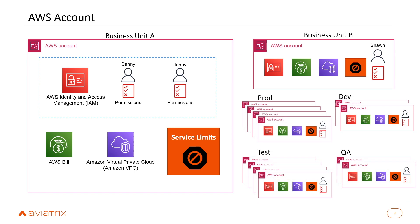This separation extends into environments like production, development, test, and QA. For example, a developer working in a dev account might make a mistake and break something, but it won't affect anything running in production. In a larger enterprise you'll see many AWS accounts across many business units and environments, which raises challenges around managing permissions, costs, networking, and so on.